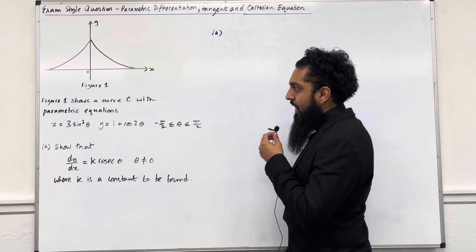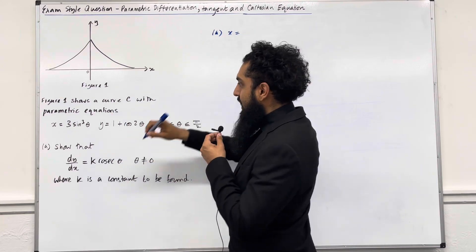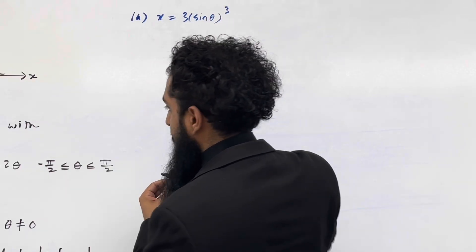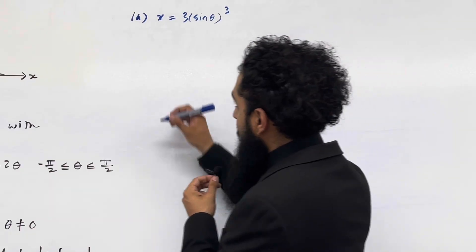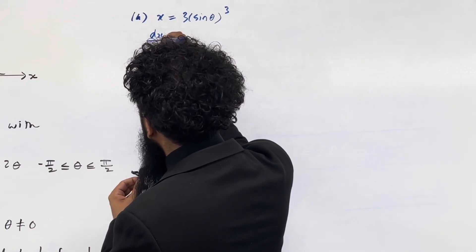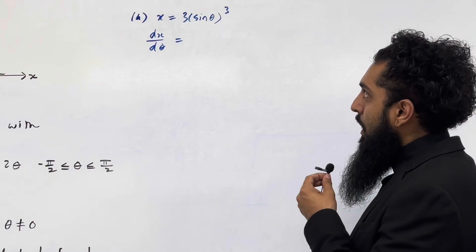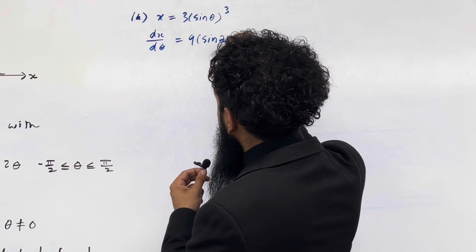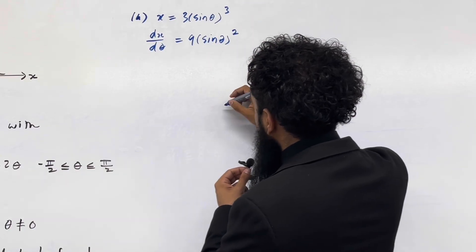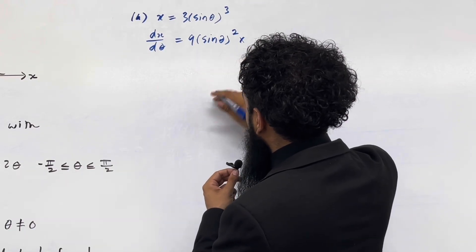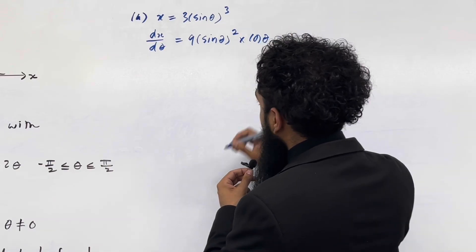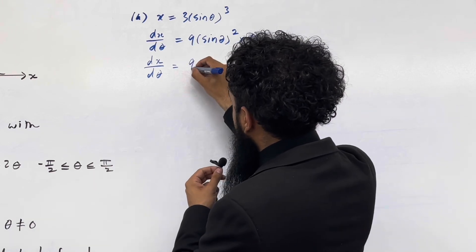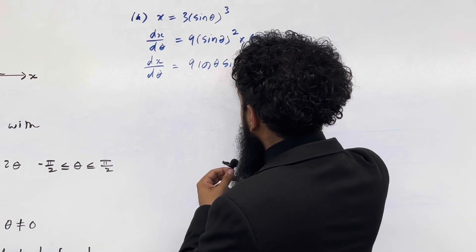The x parametric is x equal 3 sine theta in brackets cubed. I need to work out dx over d theta, differentiating x with respect to theta using the chain rule. Bring down the power: 3 times 3 is 9, subtract 1 from the power to get 2, multiplied by the differential of sine theta which is cos theta. So dx over d theta is equal to 9 cos theta sine squared theta.